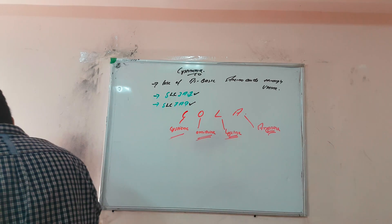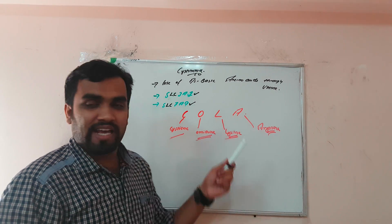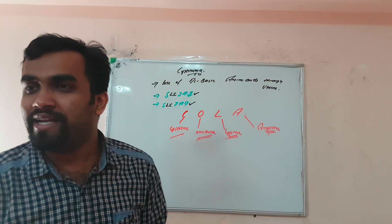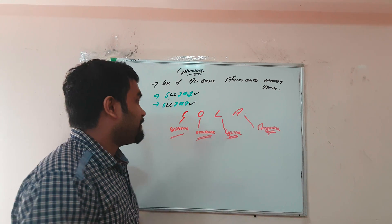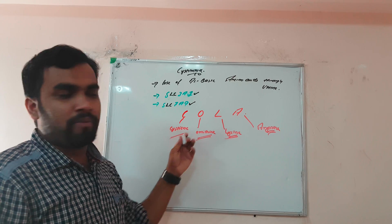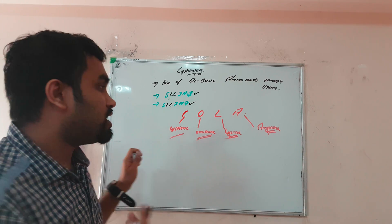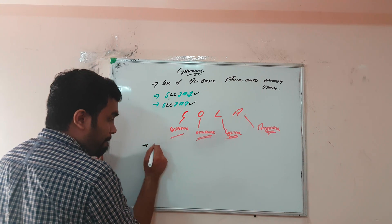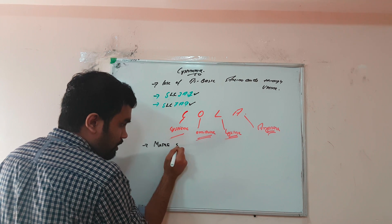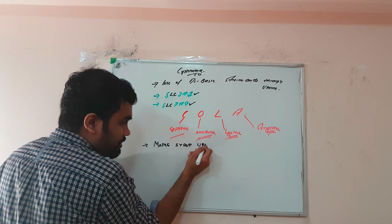Remember the COLA mnemonic for cystinuria. Now there is one more disease to know: maple syrup urine disease.